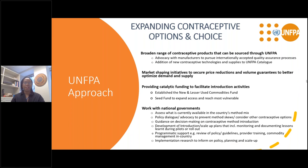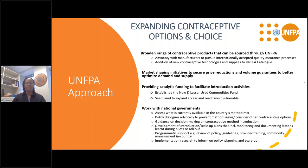Our focus in UNFPA has been to broaden the range of contraceptive products in our basket to allow for a method mix covering a wide range of categories. Quality-assured products form the foundation of what is offered to countries in the UNFPA catalog. Our market-shaping initiatives have included price reductions and volume guarantees, for example for implants and the subcutaneous DMPA self-injectable. For the most in-need countries in the UNFPA Supplies Partnership, we have established a new and lesser-used commodity fund to enable introduction of new methods without compromising existing procurement support.